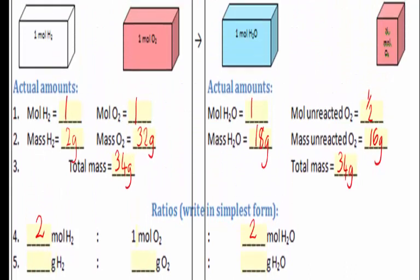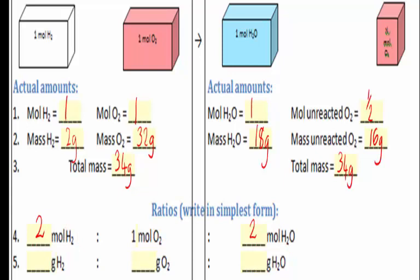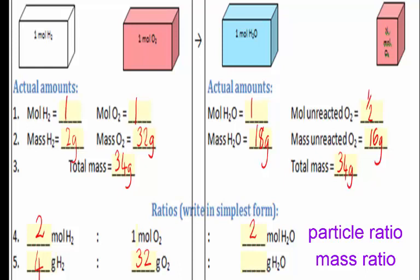Two moles of hydrogen reacts with one mole of oxygen to form two moles of water. That doesn't mean we actually had 2 moles of hydrogen — we only had 1 mole. This is a ratio; it's not the actual amounts. The ratio is just the proportion in which they react, written in the simplest form that gives whole numbers. We can convert that particle ratio into a mass ratio: 2 moles of hydrogen is 4 grams, 1 mole of oxygen is 32 grams, and 2 moles of water is 36 grams. We can see no matter is created or destroyed, because 4 plus 32 is 36.